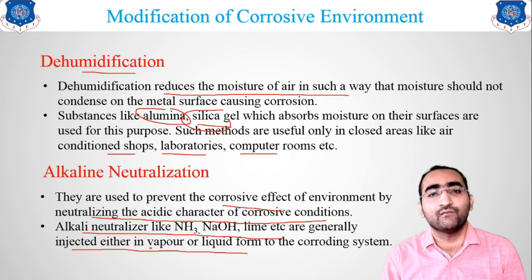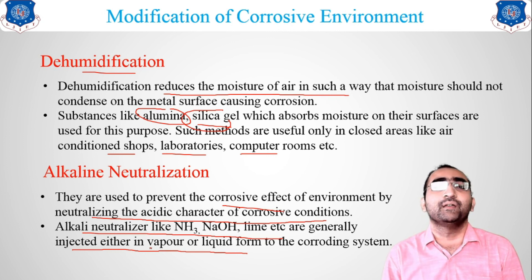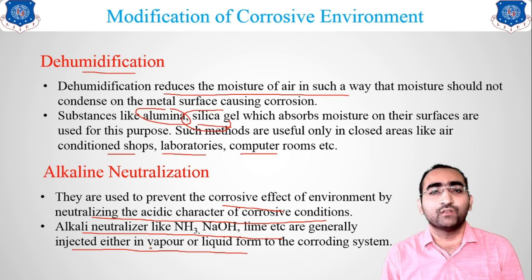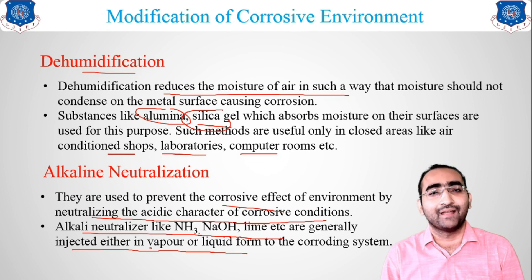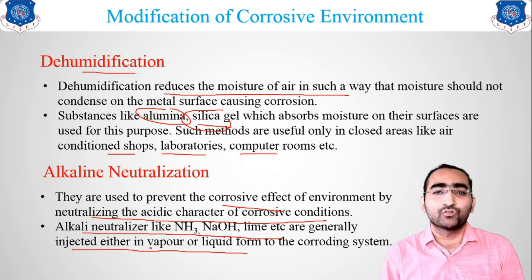This was our second method: modification of the corrosive environment. The remaining four methods of corrosion prevention will be studied in our upcoming lecture. In this lecture we studied three types of corrosion and two methods of corrosion prevention. The next lecture will be our last lecture for corrosion of metals and alloys — thank you.